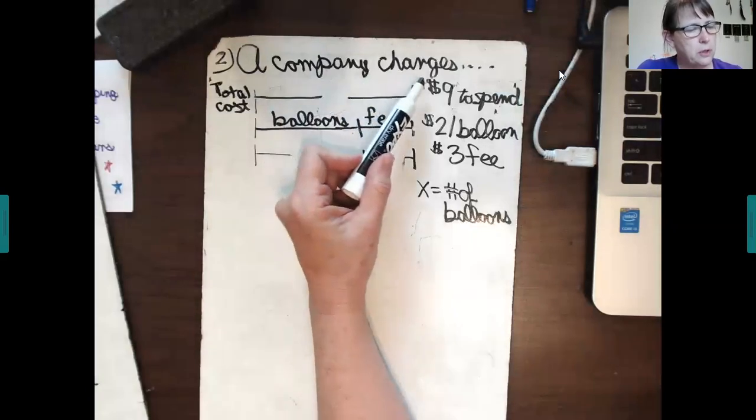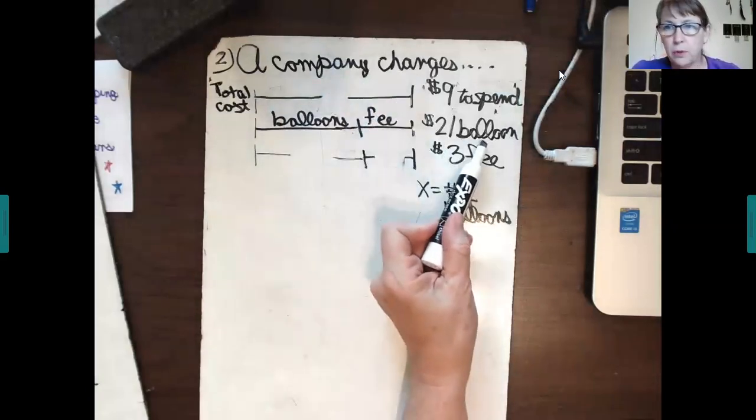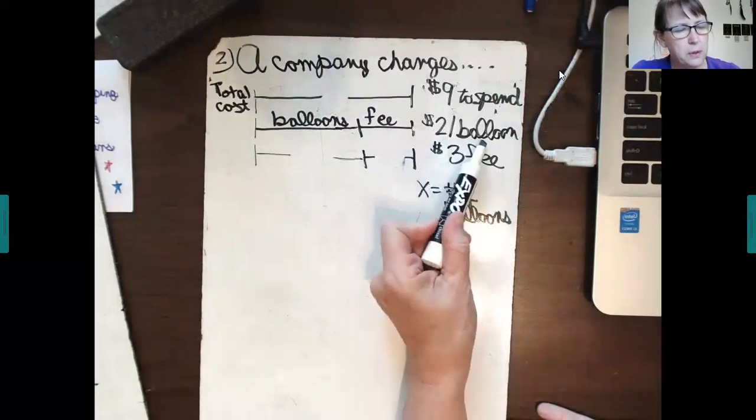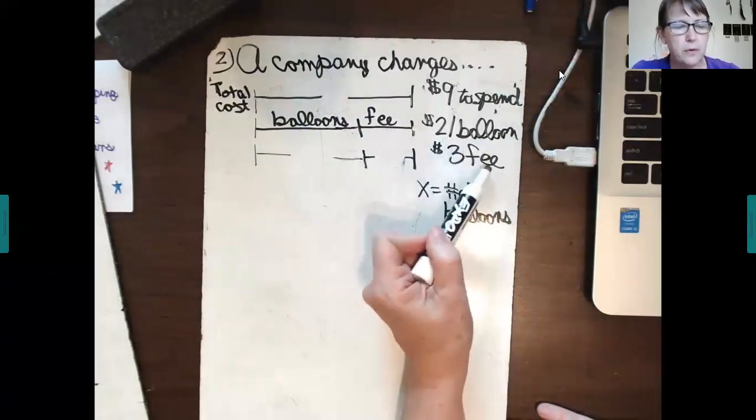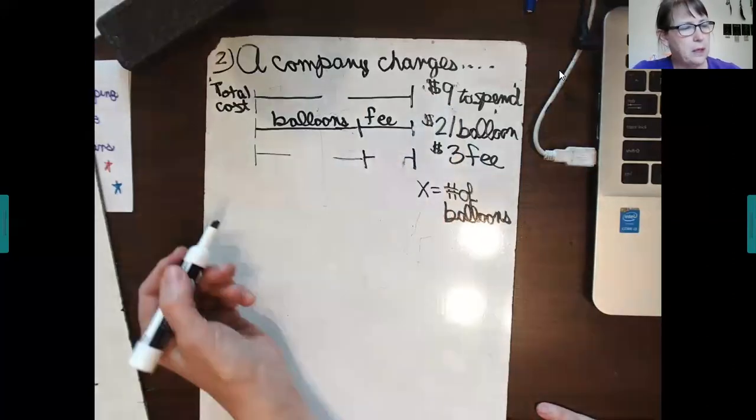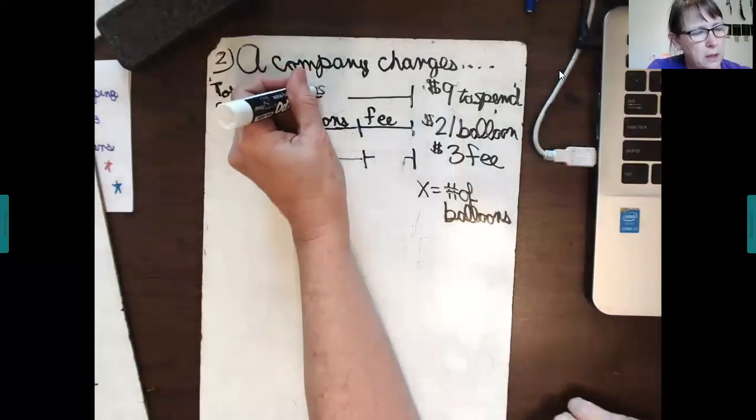A company charges $2 per balloon to go into a balloon arrangement, kind of like a flower arrangement, but it's balloons. They charge $2 for each balloon and $3 for the delivery fee. If a person comes up and has $9 to spend, how many balloons can they buy? So, the total cost would be the amount that they have to spend. That's $9.